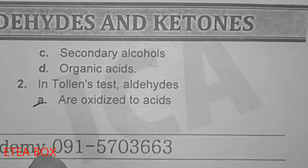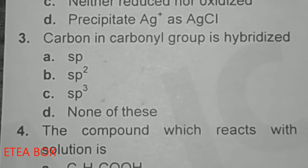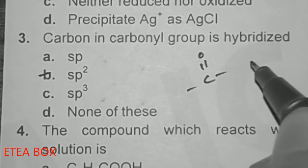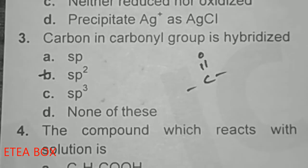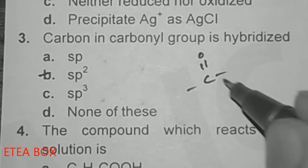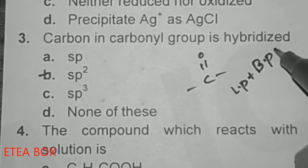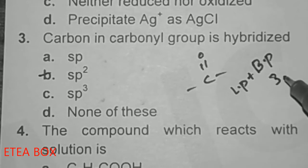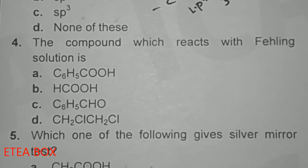In Tollens' test, aldehydes are oxidized to acids. The carbon in the carbonyl group is sp2 hybridized. For the carbonyl group, the lone pair is zero and bond pair is three; since a double bond is considered as single for hybridization, it gives sp2 hybridization.